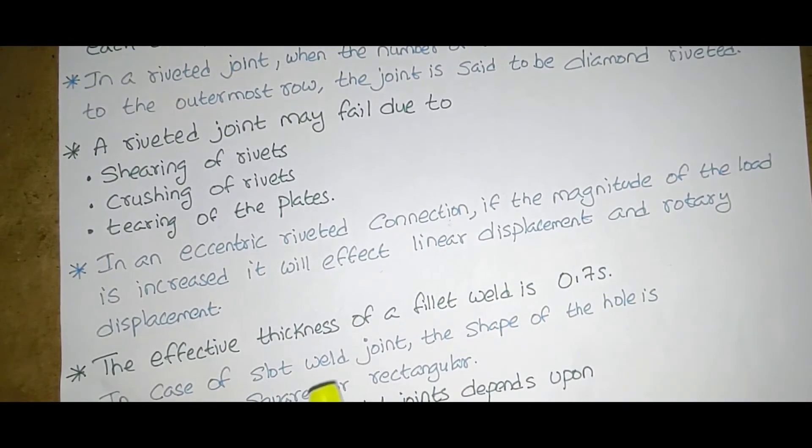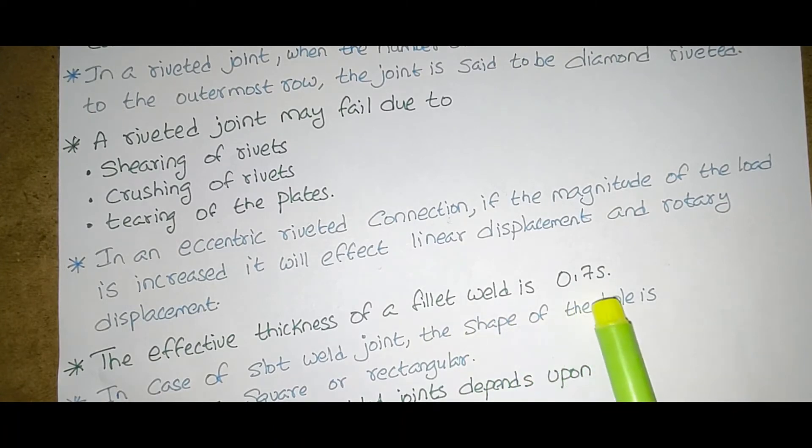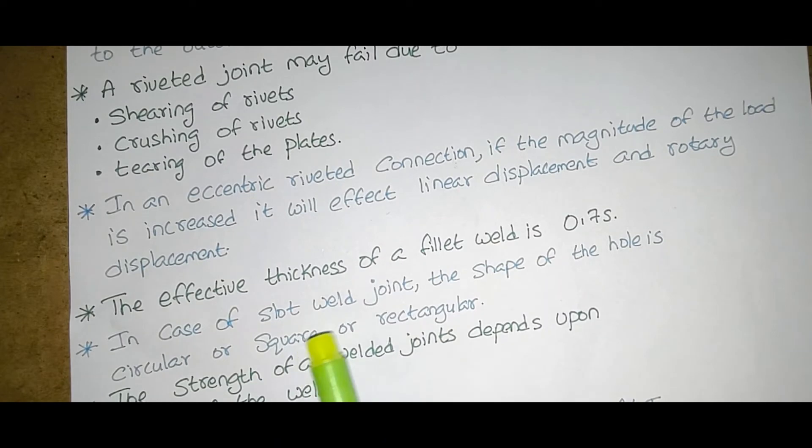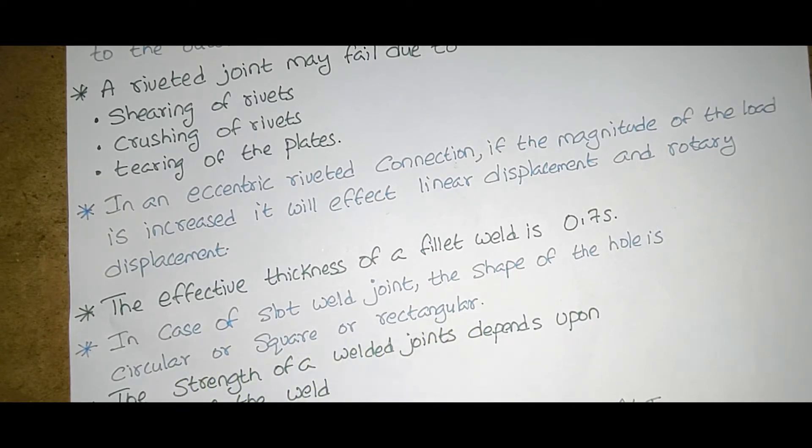The effective thickness of a fillet weld is 0.7S. In case of slot weld joint the shape of the hole is circular or square or rectangular. Any three we can select in case of slot weld joint.